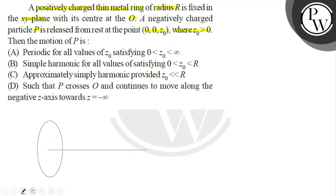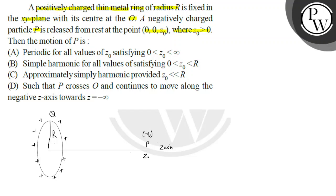Here we have a ring of radius capital R, and the z-axis is vertical. This ring lies in the XY plane with charge +q. At a distance z₀ along the z-axis, there is a particle P which carries a negative charge -q.